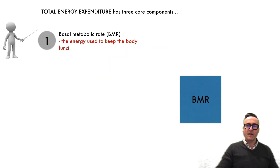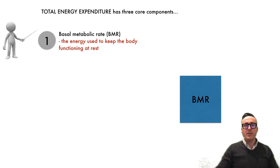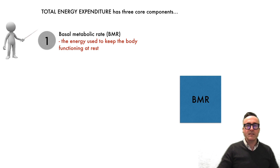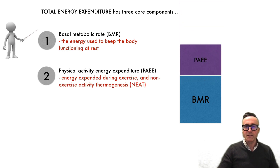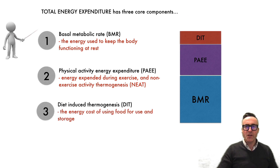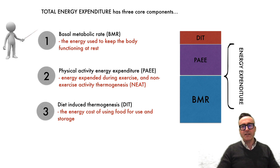In order to understand how complicated and nuanced this is, we need to explore metabolism a little further. Total energy expenditure has three core components. The first is basal metabolic rate (BMR) — the energy used to keep the body functioning at rest. Second is physical activity energy expenditure (PAEE), which covers exercise and non-exercise activity thermogenesis (NEAT). Third is diet-induced thermogenesis (DIT), the energy cost of using food for use and storage. Together these add up to our total energy expenditure.